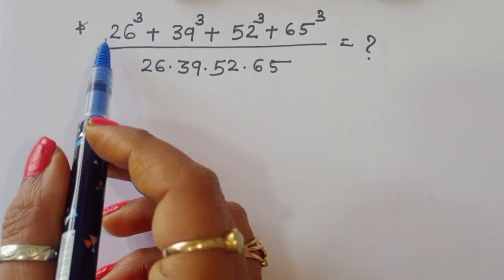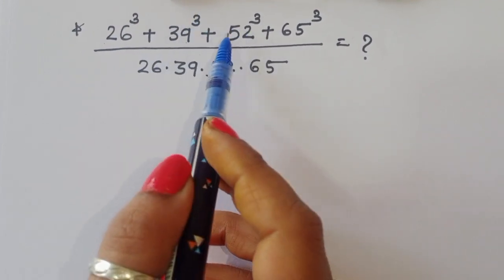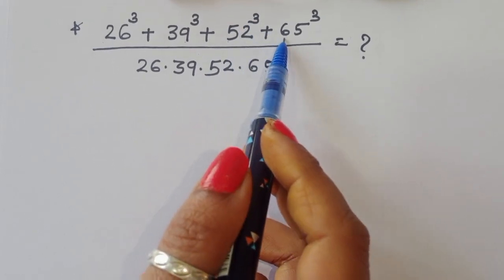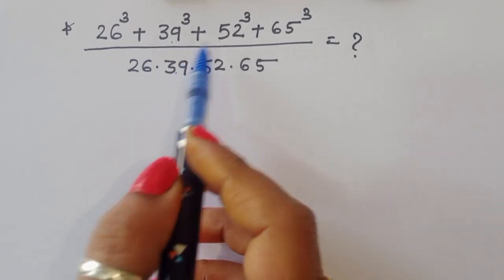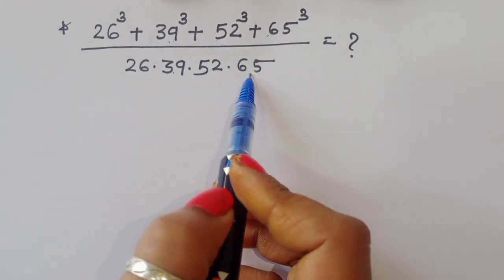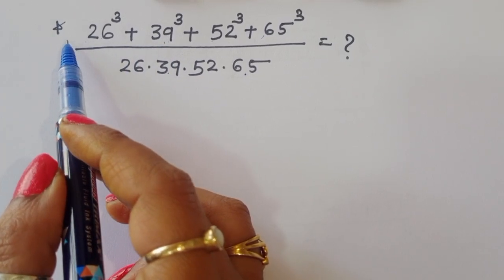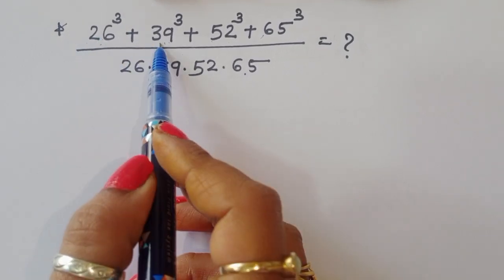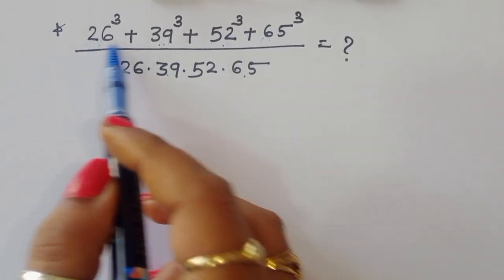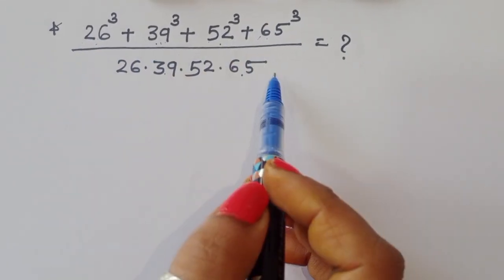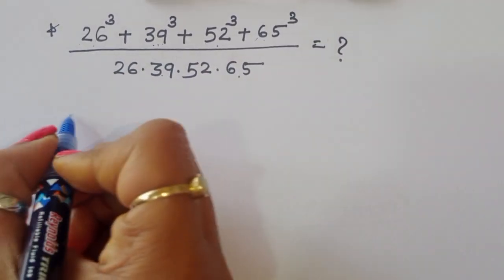The question is: given 26 power 3 plus 39 power 3 plus 52 power 3 plus 65 power 3, divided by 26 times 39 times 52 times 65. This is a very nice question. If you consider the table of 13: 2 times 13 is 26, 3 times 13 is 39, 4 times 13 is 52, and 5 times 13 is 65. All these terms are in multiplication form — we have to find the value of this expression.